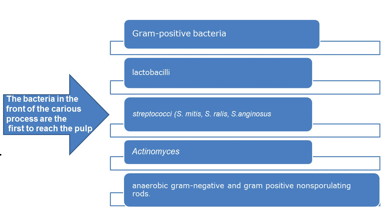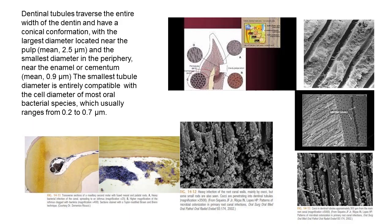Anaerobic gram-negative and gram-positive non-sporulating organisms are expected, including actinomyces, streptococci, and lactobacilli. The dentinal tubules that pass through the full width of the dentine have a variable diameter.